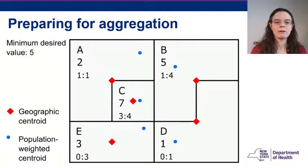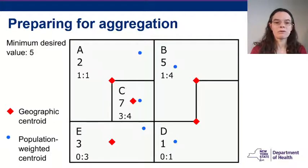Preparing for aggregation: GATT begins with the area with the highest count below the minimum desired value and selects the area to merge first based on the aggregation method chosen. For this illustration, we aggregate to the closest geographic centroid.